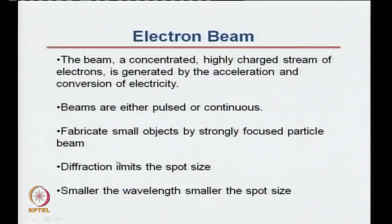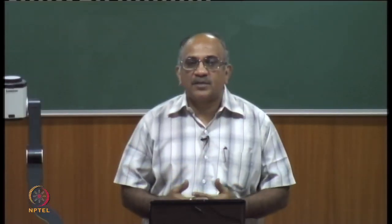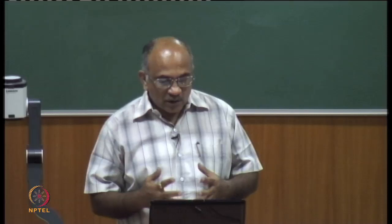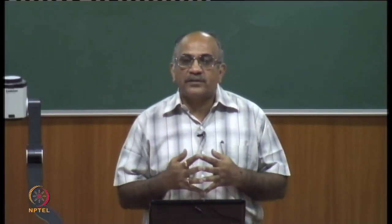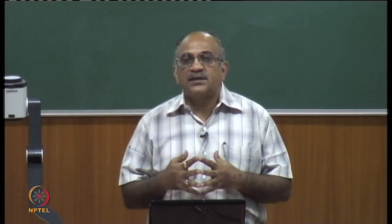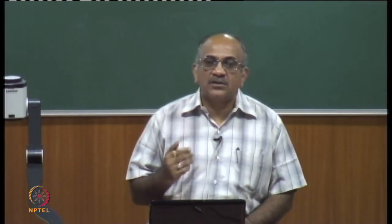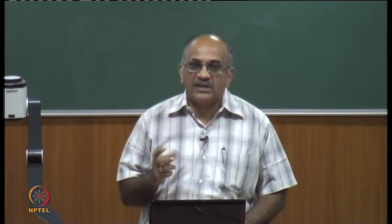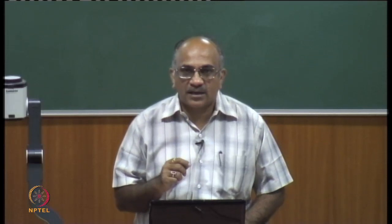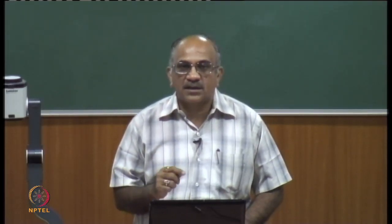Diffraction normally limits the spot size; smaller the wavelength, smaller is the spot size of the electron beam which falls on the substrate. To make the electron beam very small, you need a very small wavelength, which means the electrons must have high energy, because wavelength is inversely proportional to energy. By varying the potential used to generate the electrons, you can control their energy and hence control the wavelength and the spot size of the electron beam.